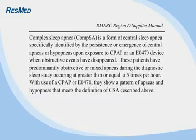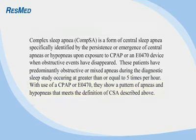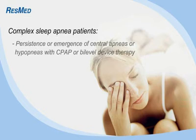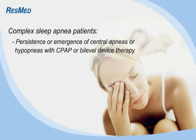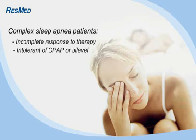According to the DMERC Region D Supplier Manual, complex sleep apnea is a form of central sleep apnea identified by the persistence or emergence of central apneas or hypopneas upon exposure to a CPAP or bi-level device. With the use of CPAP or bi-level, patients show a pattern of apneas or hypopneas that meet the definition of central sleep apnea. The distinguishing feature of complex sleep apnea is the persistence or emergence of central apneas or hypopneas upon exposure to a CPAP or bi-level device. Although obstructive events are reduced, the AHI remains abnormal. Patients with complex sleep apnea usually have incomplete symptomatic response to therapy and are frequently intolerant of CPAP or bi-level.